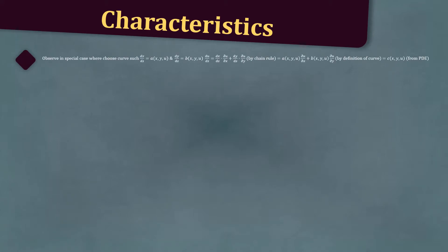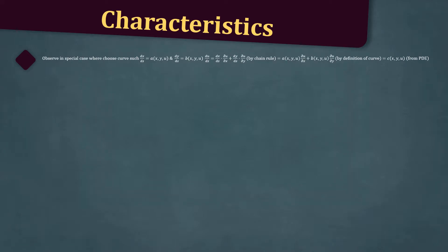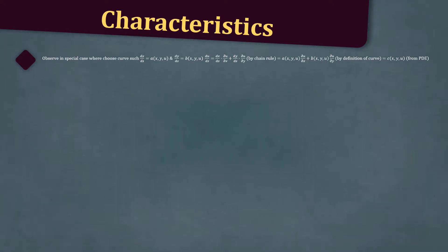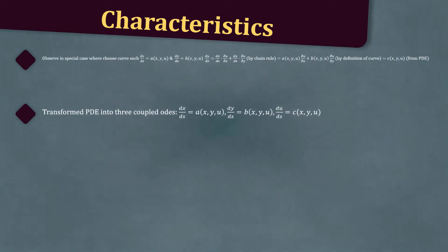Next, let's discuss characteristics. In the special case where we choose the curve such that dx/ds equals a(x, y, u) and dy/ds equals b(x, y, u), the chain rule gives us that du/ds equals a(x, y, u) times the partial derivative of u with respect to x, plus b(x, y, u) times the partial derivative of u with respect to y, which equals c(x, y, u) from the PDE. We have then transformed our PDE into three coupled ODEs.